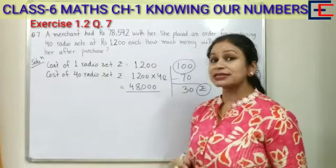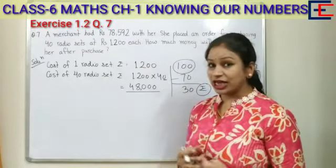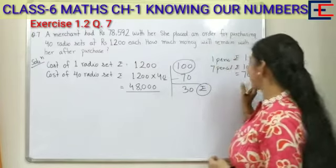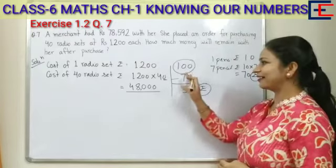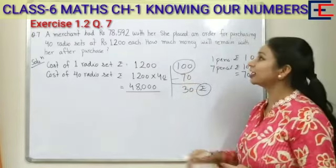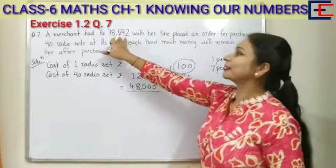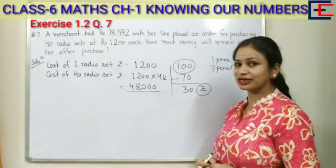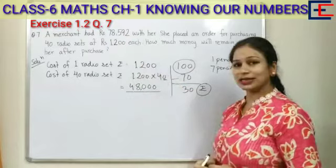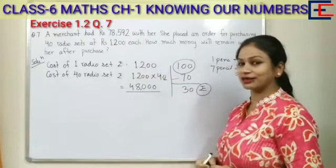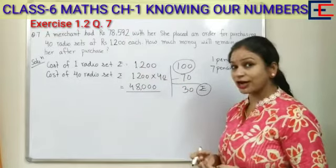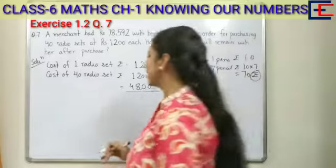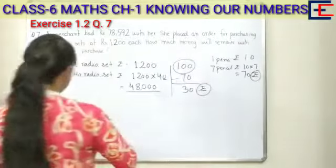Now, what is left? What will we do? We will subtract. How much money did she have? 78,592 rupees. What will we do? Subtract.